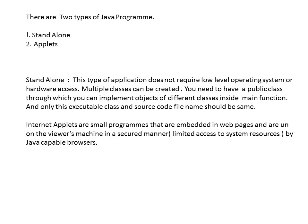Now we move into the different types of Java programs. There are two types: one is called standalone and another is called applets. Standalone applications do not require low-level operating system or hardware access. Multiple classes can be created — you need a public class through which you can implement objects of different classes inside the main function. The name of the .java file which is saving the source code and the class containing the main function should have the same name.